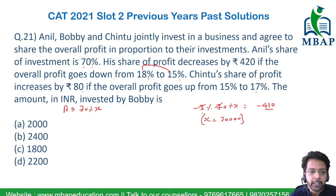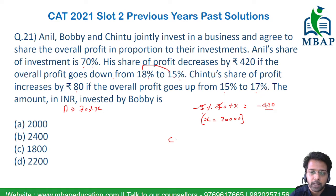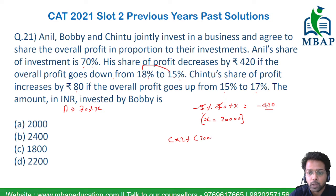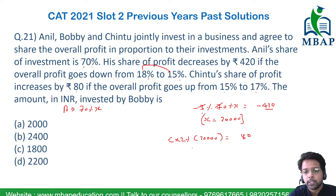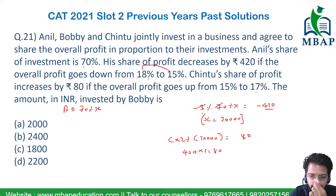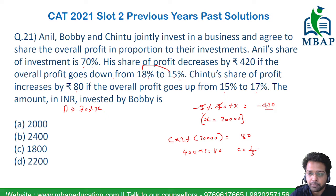C's share of profit increases by 80 rupees if the profit goes up from 15% to 17% — an increase of 2%. C's share of the investment is unknown. But 2% of the total investment of 20,000 is 400. So C's share multiplied by 400 equals 80 rupees. Therefore, C's share is 80 divided by 400, which equals 1/5.